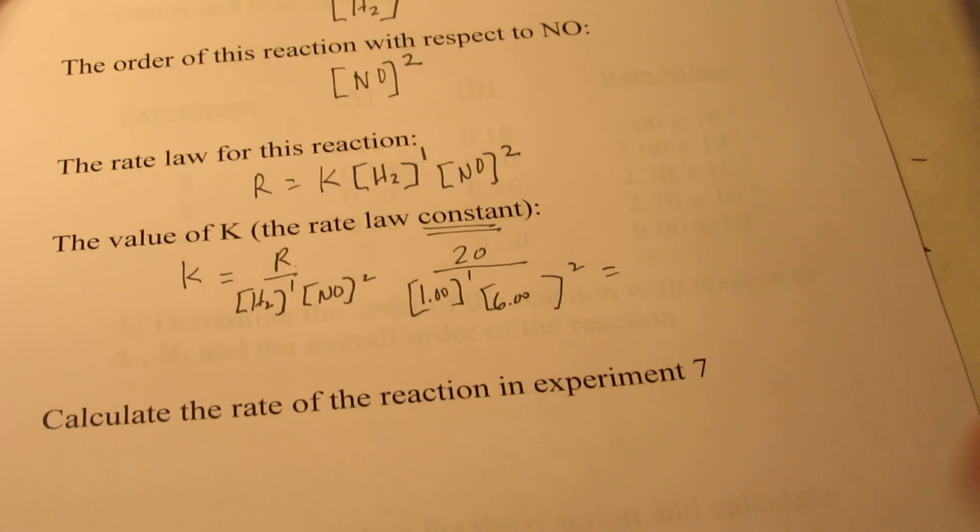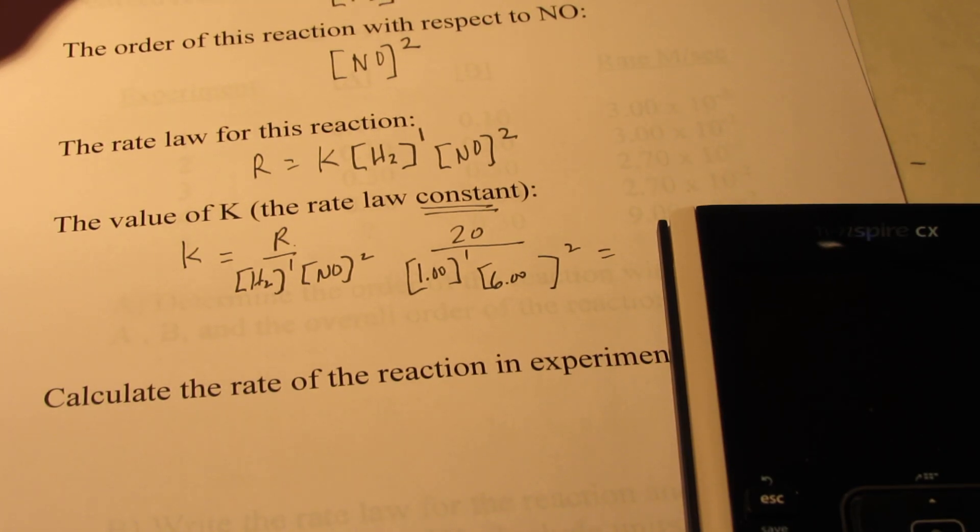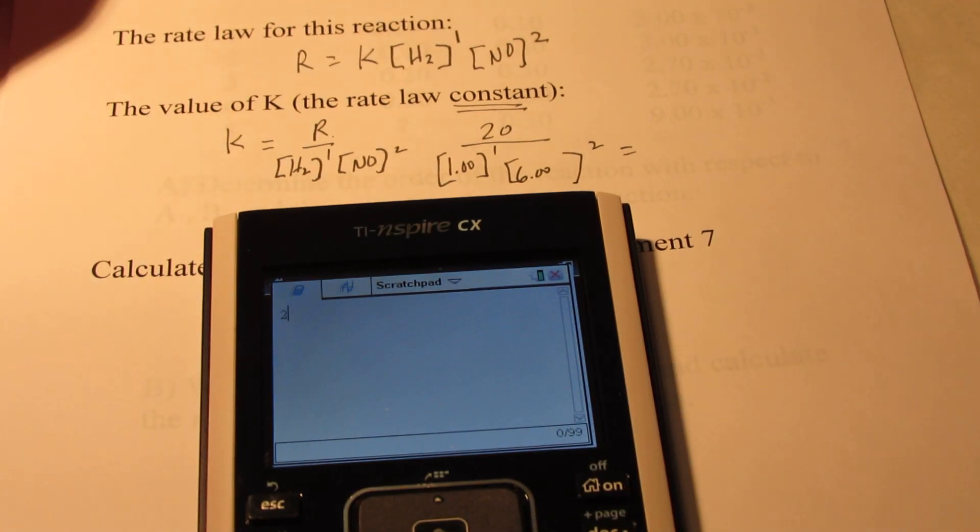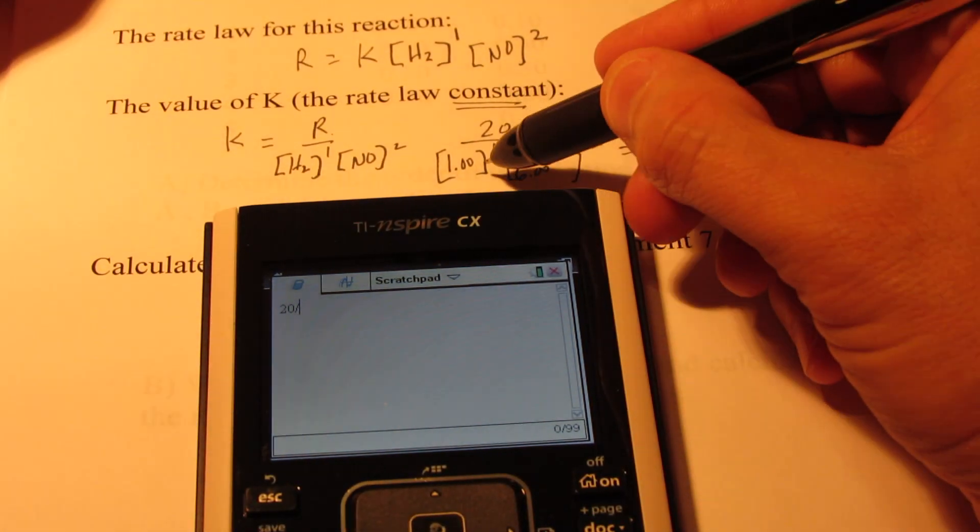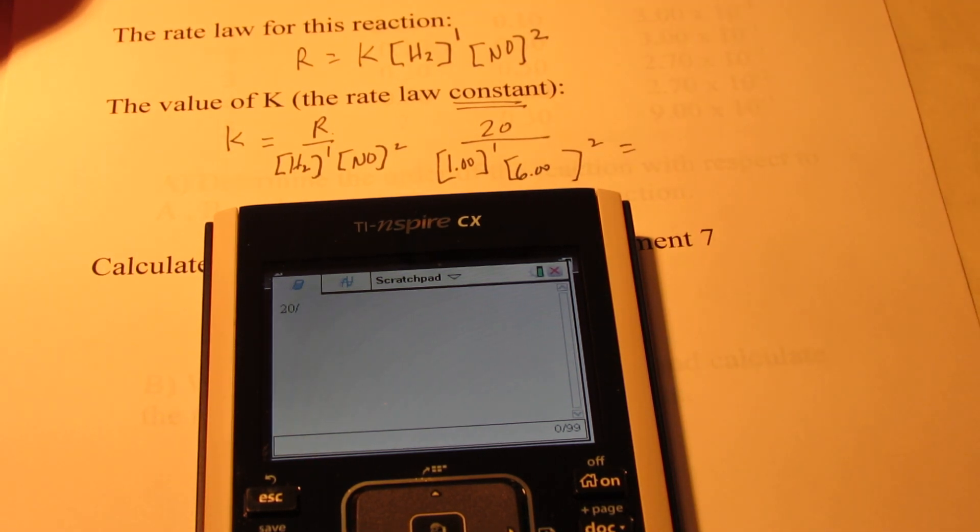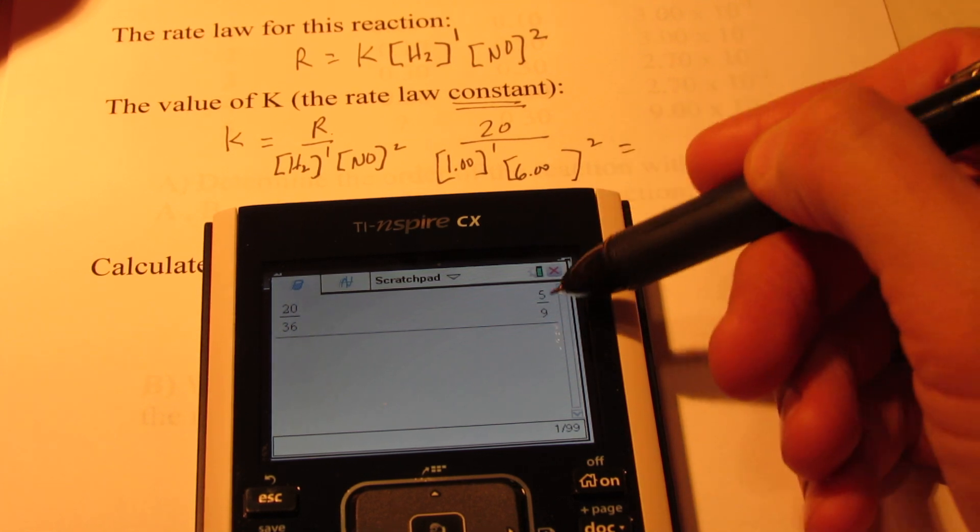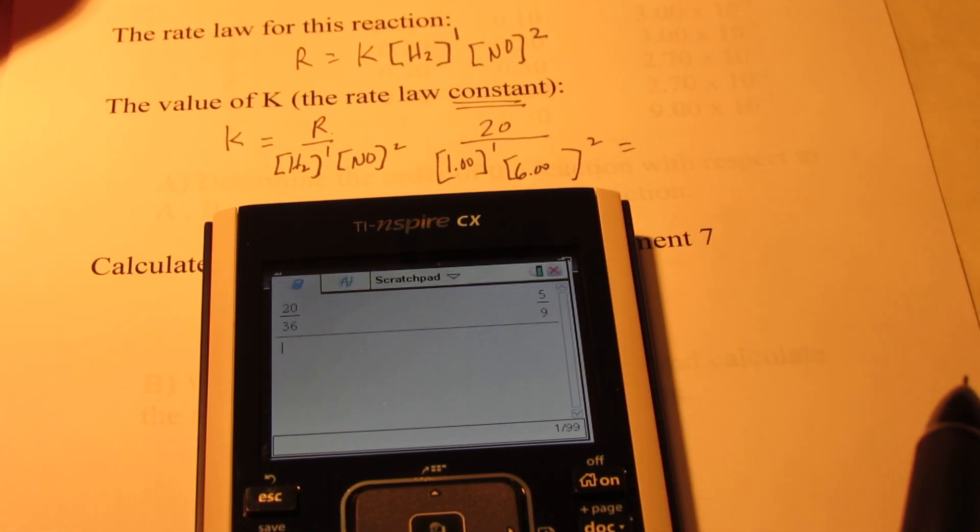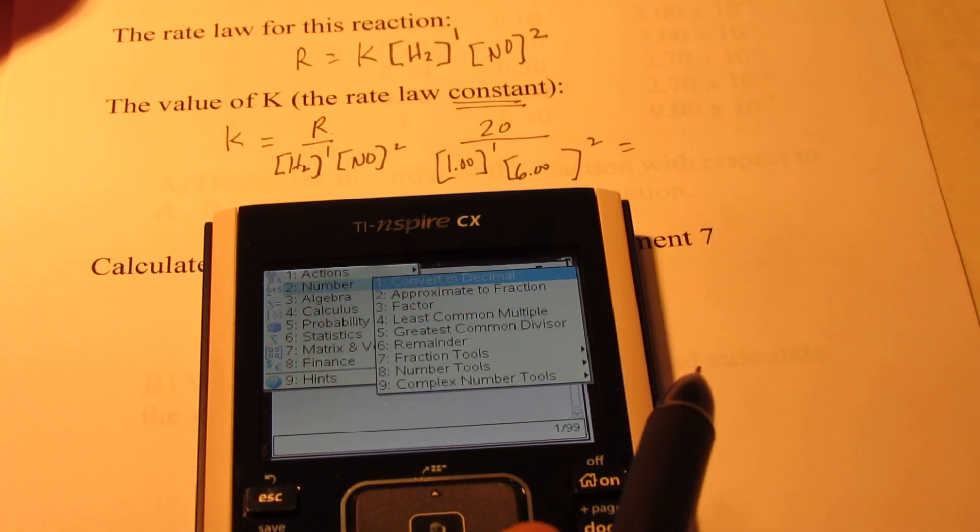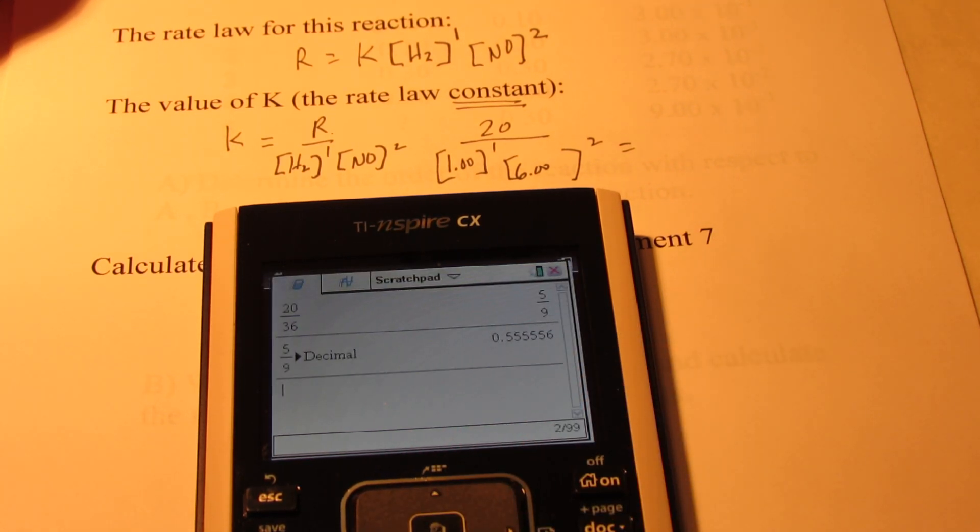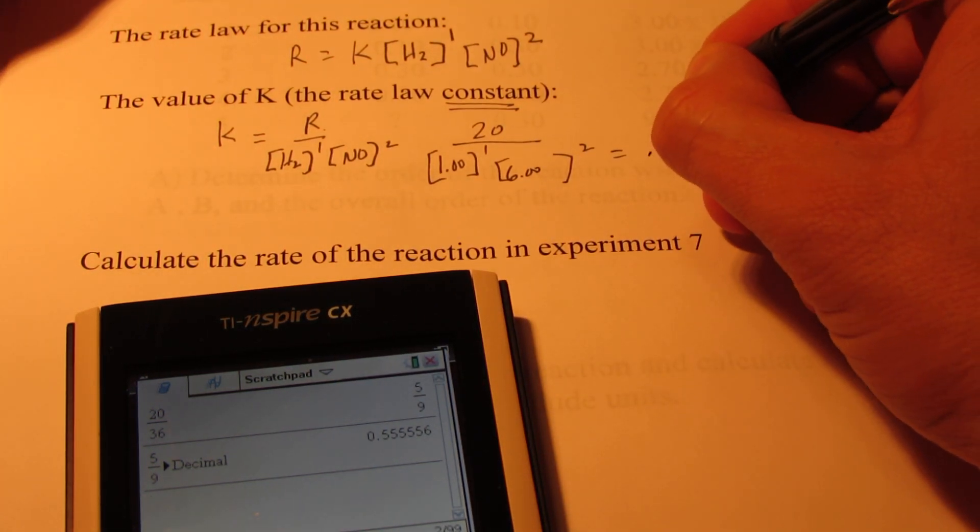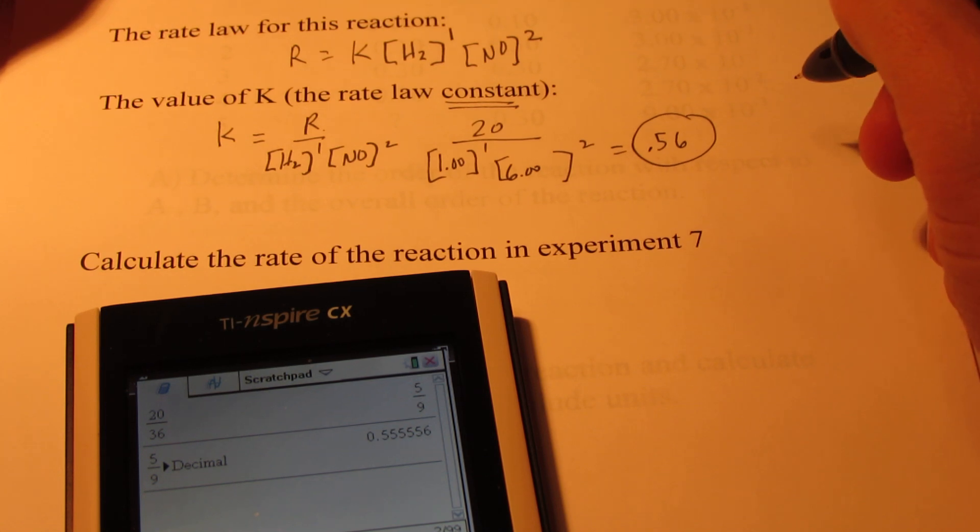So now we can solve for the rate constant. Let's see what we end up with here. We have 20 divided by 1, which we probably don't need to do, divided by 6 squared. 6 squared is 36, isn't it? Now my calculator shows that as a fraction and it bothers me, so let's go ahead and we'll change that to a decimal. And that turns out to be, to two significant figures, 0.56.